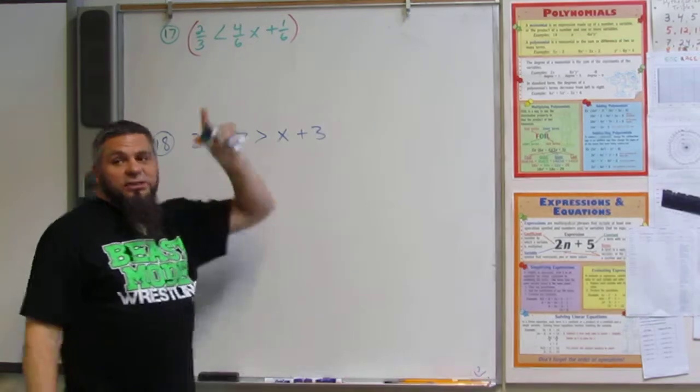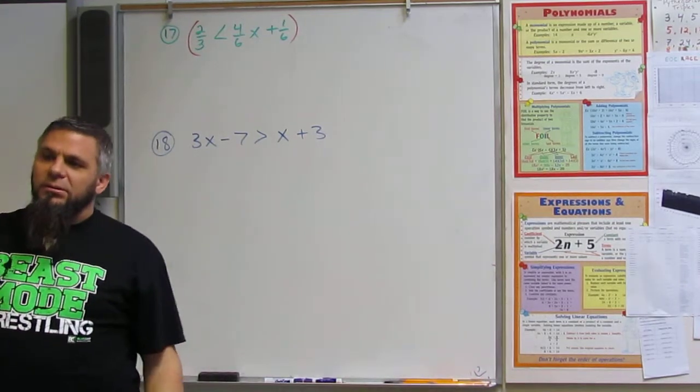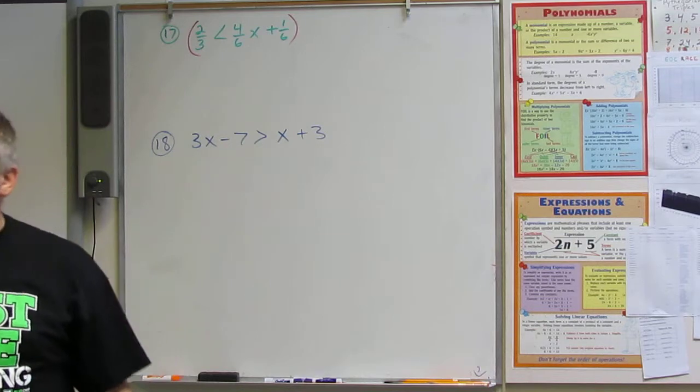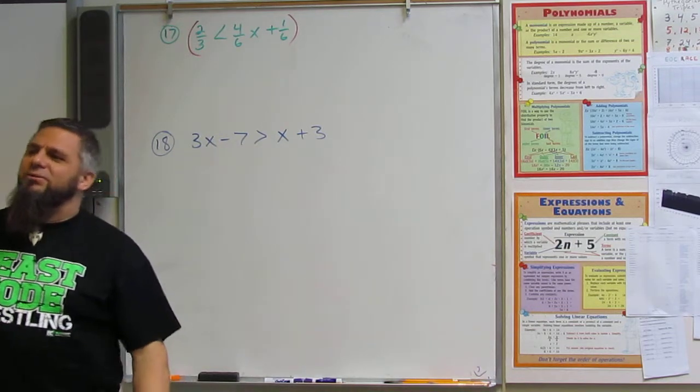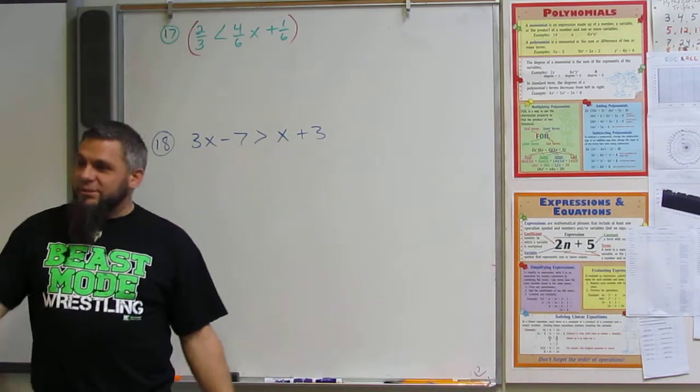So the denominators are 3 and 6, or I should say the lowest common denominator. So what's the lowest number that 6 and 3 both go into? 6, good.